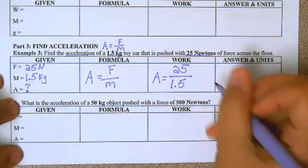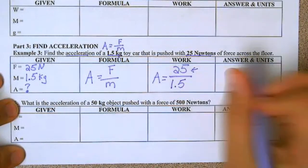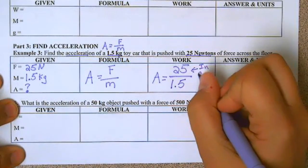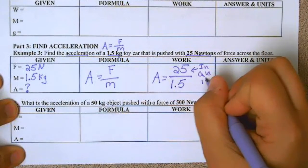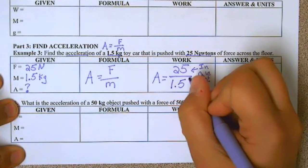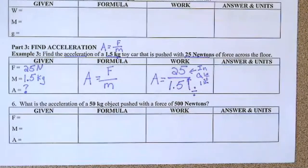So remember when you do this, whatever's in the top goes in your calculator first. This line means to divide. So don't get confused.